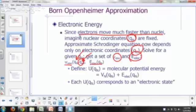We can define now what we call the molecular potential energy, U, as a function of Q sub n, as the potential energy of interaction among the nuclei. For example, let's say you have H2. What would be the potential energy of interaction between the two nuclei?